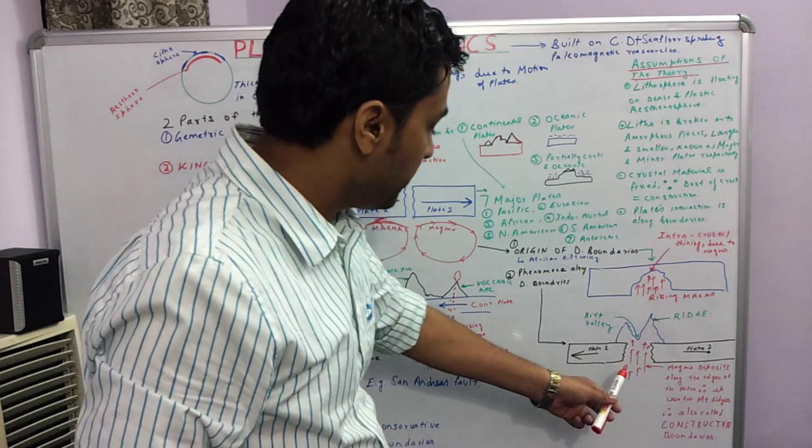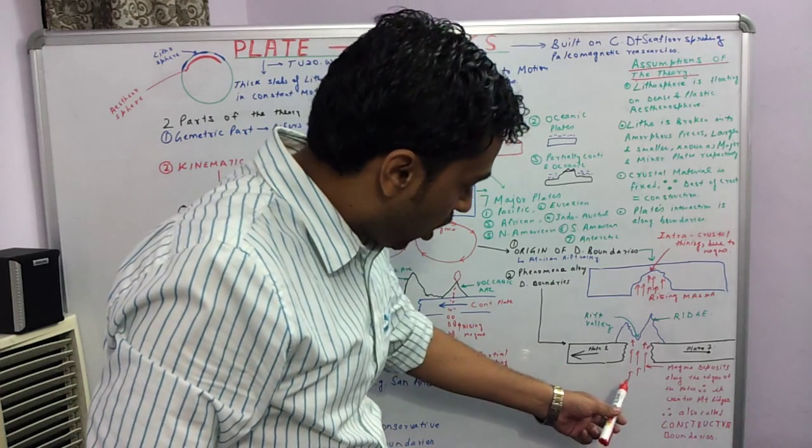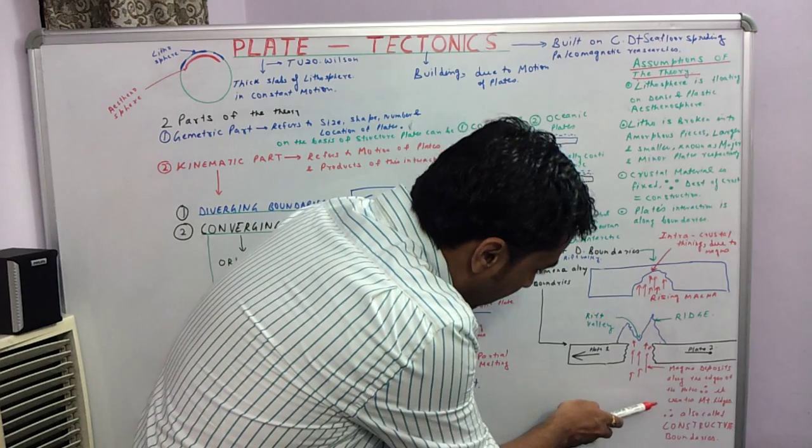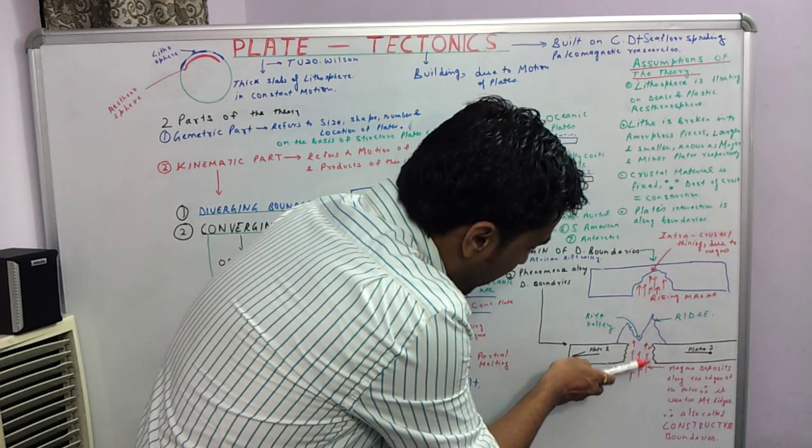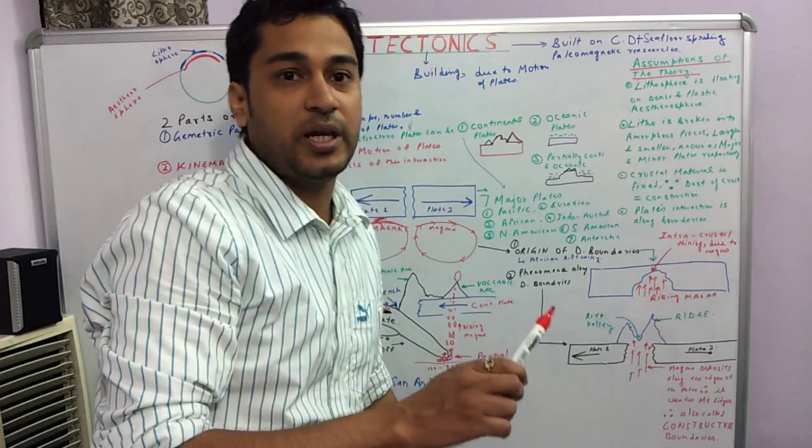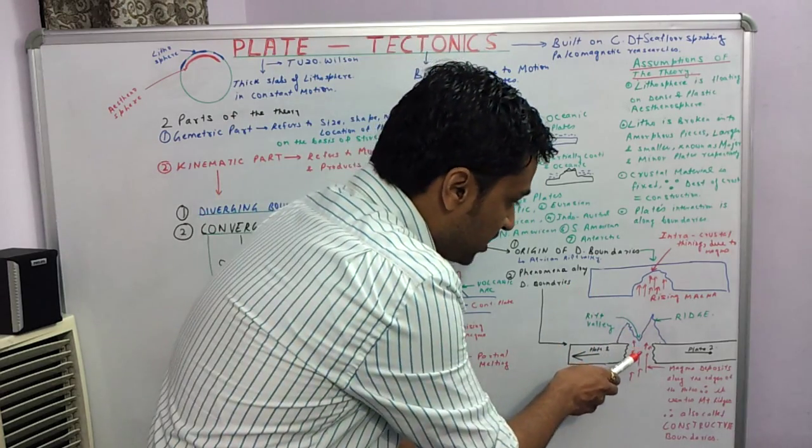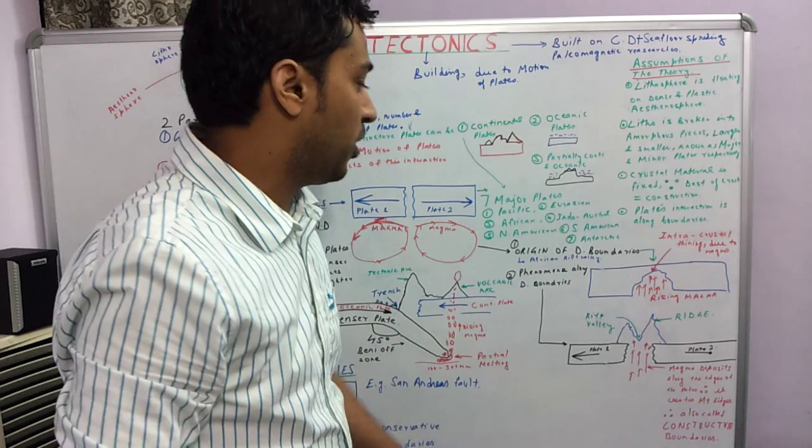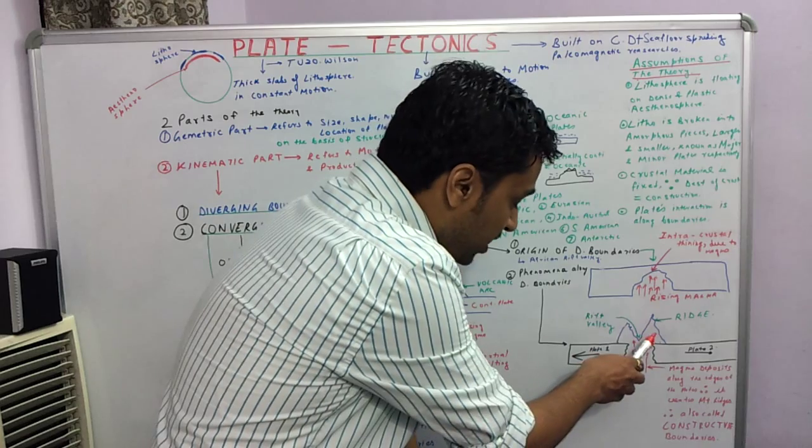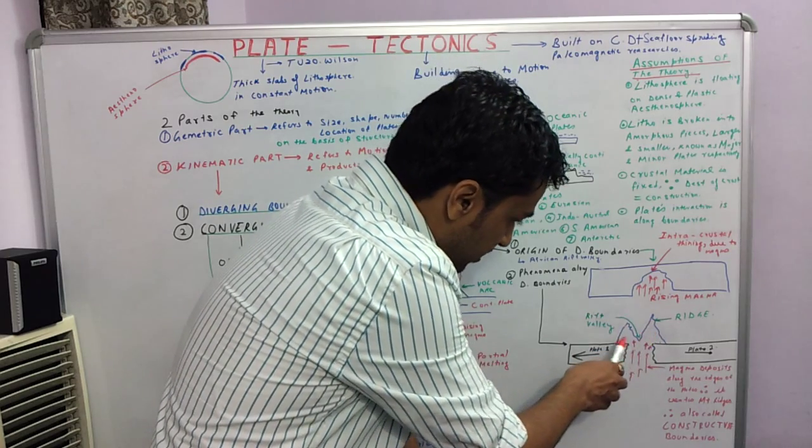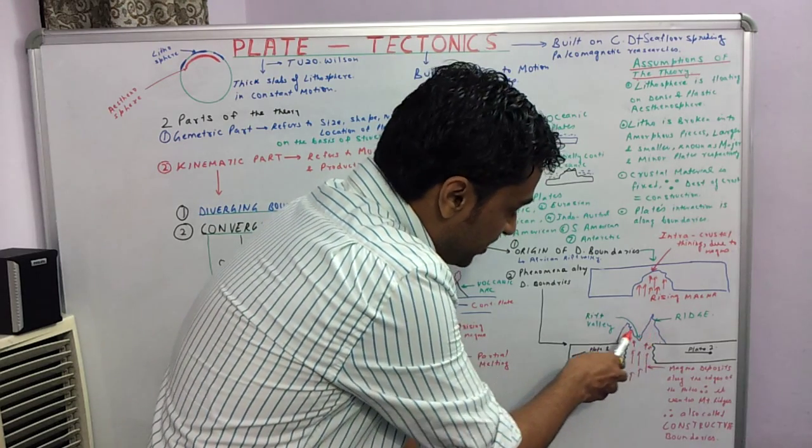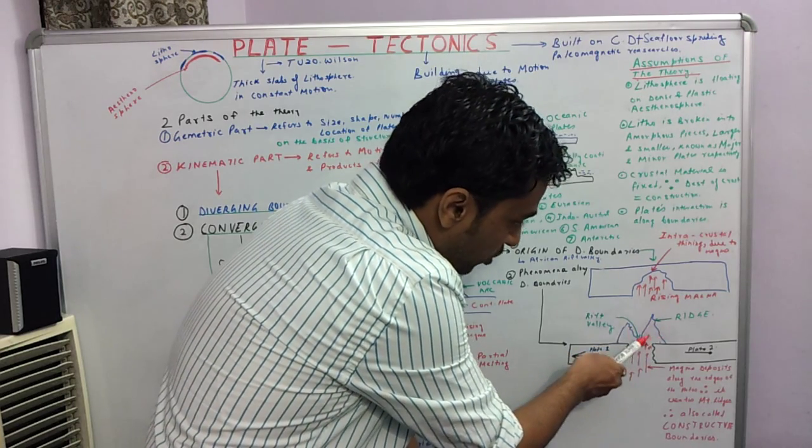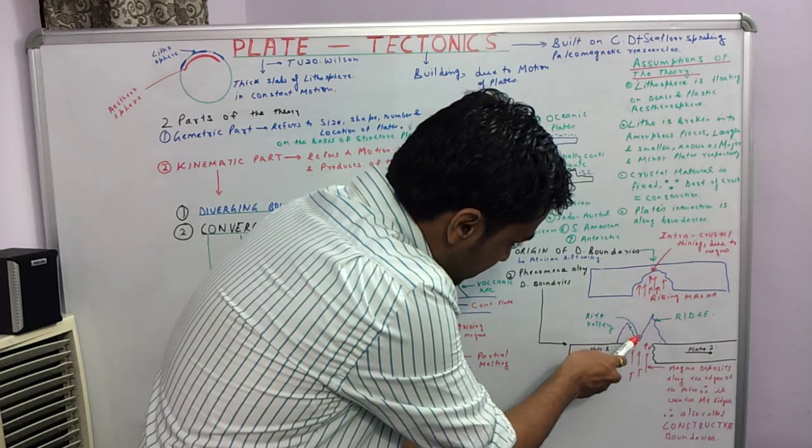Now we will also look at the phenomenon that goes along the diverging plate boundaries. In this diagram you can see the two plates are moving away and magma is rising up. Because of the rising magma, new crustal material is formed along the diverging boundaries. That is why these plate boundaries are also called constructive plate boundaries. In between the diverging plate boundaries and the new crustal material, there is a rift valley also which is formed.